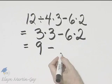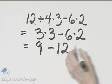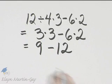I'll go ahead and multiply. 6 times 2 is 12. So I have 9 minus 12.